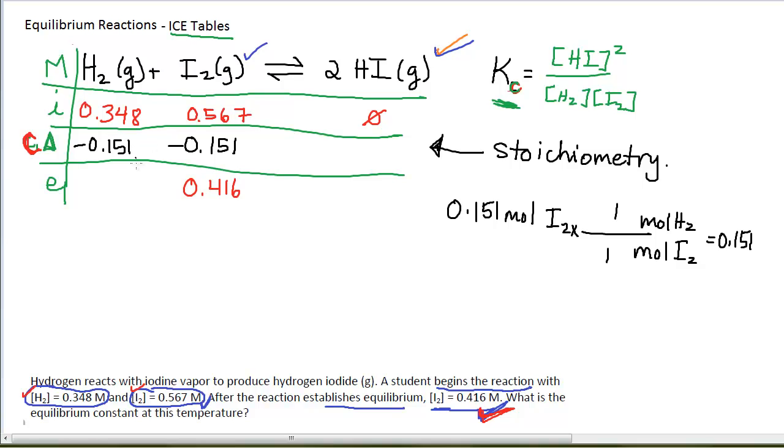So that means 0.151 moles per liter of H2 are also used up. I am writing negative signs here because that amount is being used up. That means the equilibrium amount of H2 is 0.348 minus 0.151 or 0.197 moles per liter is left. For HI, I can calculate how much HI is produced starting with my 0.151 moles per liter of I2. The stoichiometry now for the I2 to HI conversion is 2 to 1.